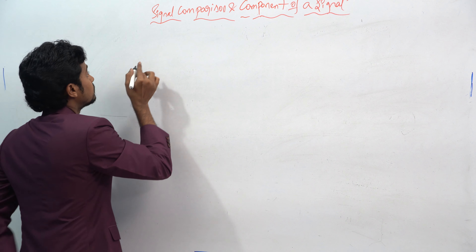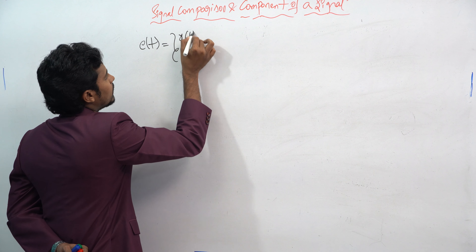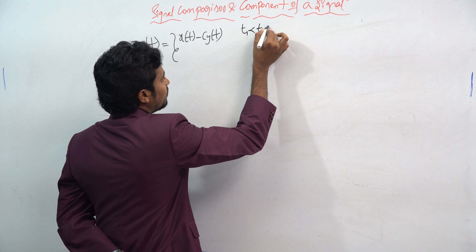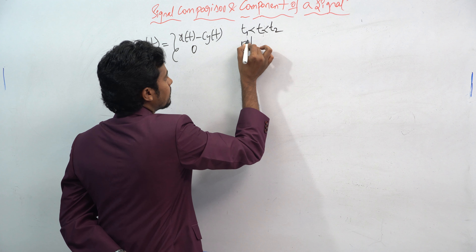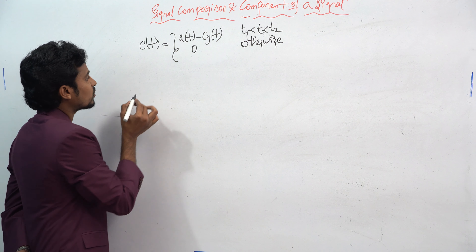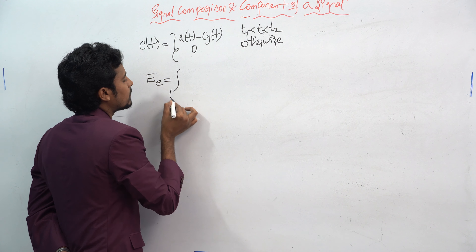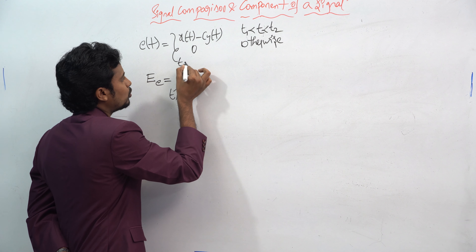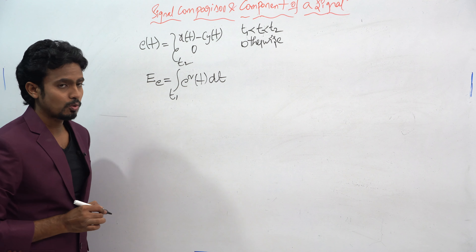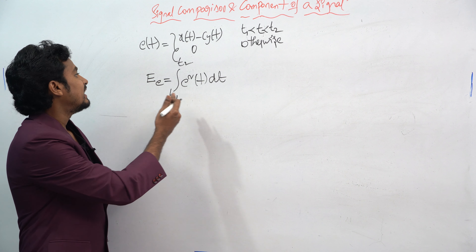So e(t) = x(t) − c·y(t) for the time period between t1 and t2, and 0 otherwise. The formula for the energy of the error signal, capital E, is equal to the integral from t1 to t2 of e²(t) dt. Now we substitute e(t) into this integration.